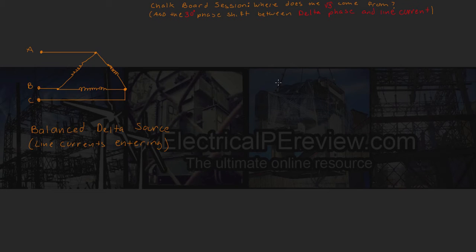Hello and welcome to another video by electricalpereview.com. In this video, we're going to find out where the square root of 3 comes from and the 30 degree phase shift when dealing with delta phase and delta line currents. So let's begin.